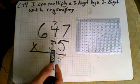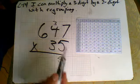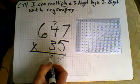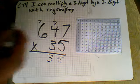5 times 4 is 20, 21, 22, 23. Put the 3 there, carry my 2 over to the hundreds.